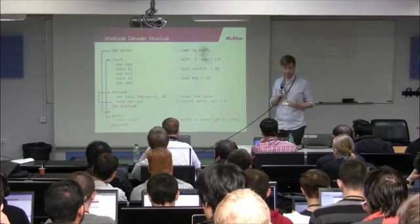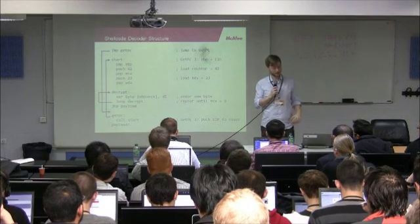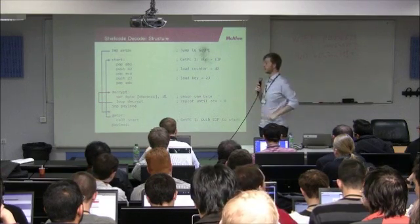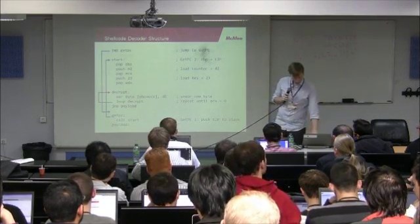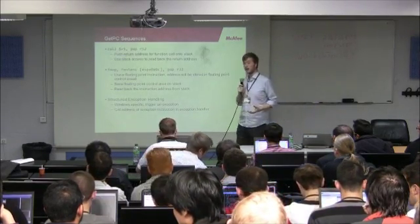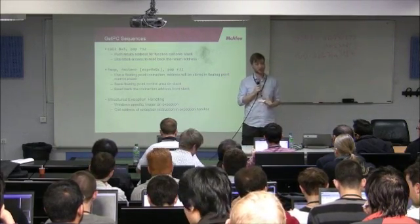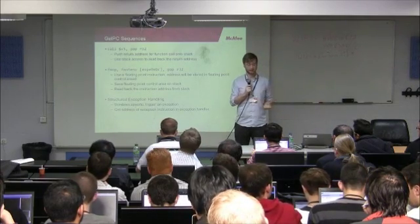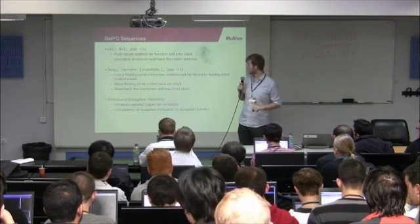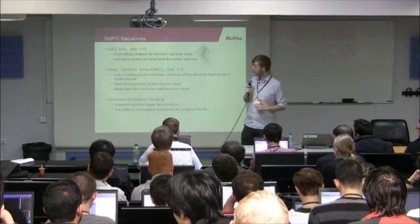So, these GetPC sequences are mandatory to decode the shellcode on the x86 32-bit architecture. The 64-bit architecture has RIP relative addressing, I'm not going to get into that, but then it's not mandatory anymore. On the 32-bit x86 architecture, we need this to actually decode our shellcode, and usually you have to decode the shellcode. So, what possible sequences are there?